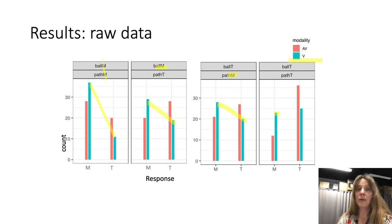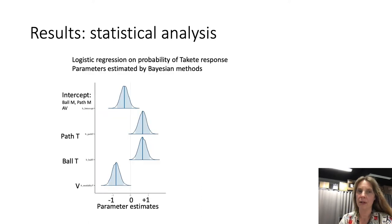The results were confirmed by statistical analysis. We fit a logistic regression model on the probability of a takete response and estimated its parameters by Bayesian inference. This model was additive, so it did not include interactions. However, it did confirm that with a takete path, we had credibly more takete responses, as well as with a takete ball.